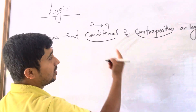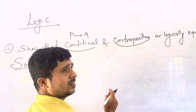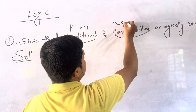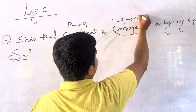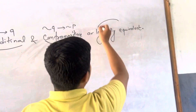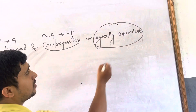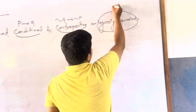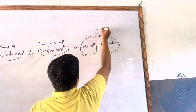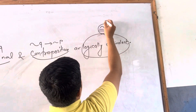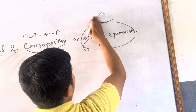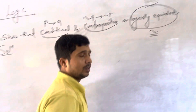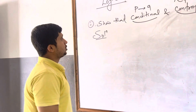Conditional means two simple statements P and Q connected by this symbol — in symbol, P then Q. Contrapositive means negation Q then negation P. Logically equivalent means the conclusion remains the same, written with this symbol.